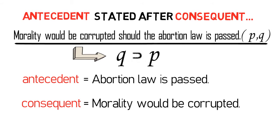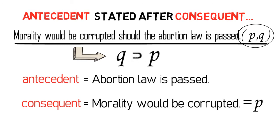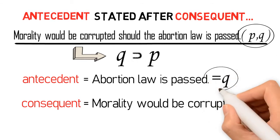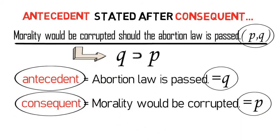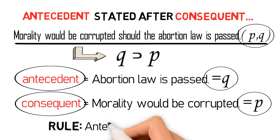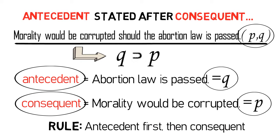As I already pointed out in my previous discussion, the variables provided after the proposition represent the propositions in the entire proposition respectively. Thus, in the statement 'Morality would be corrupted should the abortion law be passed' — P, Q — the variable P stands for 'morality would be corrupted' and Q stands for 'abortion law is passed.' Since Q is our antecedent and P is our consequent, and since in symbolizing conditional propositions we need to write the antecedent first and then the consequent, the proposition is symbolized as Q then P.